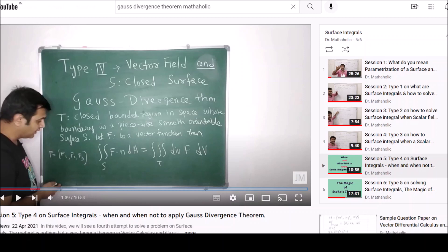But when is this true? When S is a piecewise smooth orientable surface and the region that the surface S encloses is a closed and bounded region T, in that case you can always use this theorem.